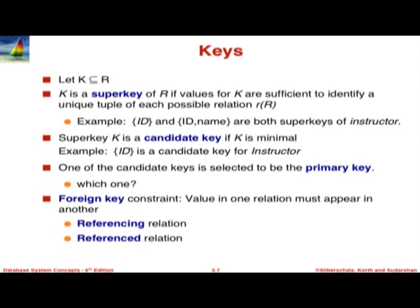Now, some notation about keys. First, there is a notion of a super key. It is a subset of attributes — let K be a subset of or equal to R. R is the set of attributes, K is any subset of those attributes. We say that K is a super key of R if the values for K are sufficient to identify a unique tuple for each possible relation instance of R.